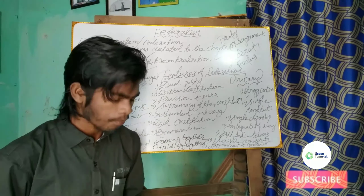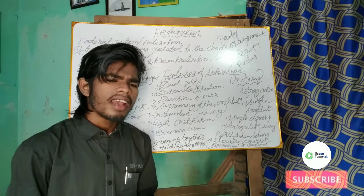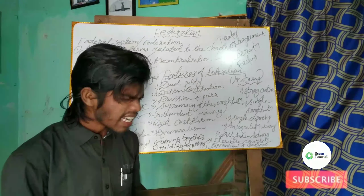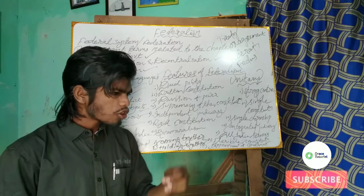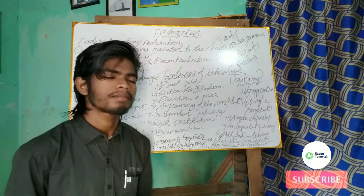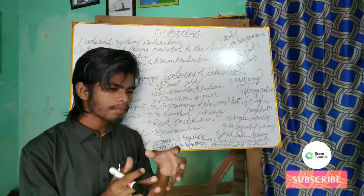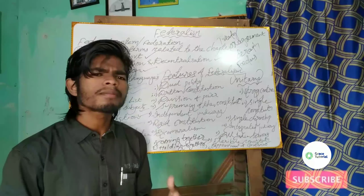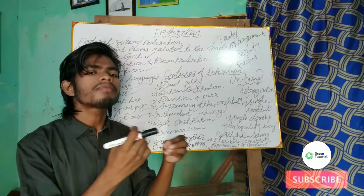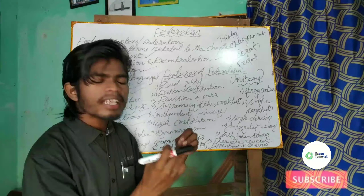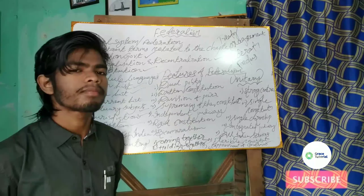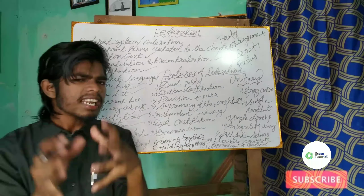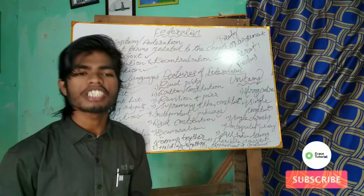Number one is dual polity. The constitution establishes a dual polity consisting of the union at the center and the states at the periphery. Each is endowed with sovereign powers to be exercised in the fields assigned to them respectively. The union government deals with matters of national importance like defense, foreign affairs, currency, and communication, whereas the state government deals with matters of local importance like public health, maintaining law and order within the state, and trade and commerce.